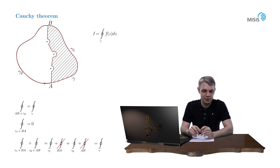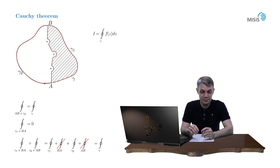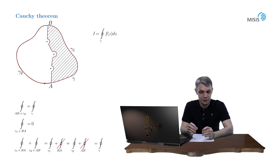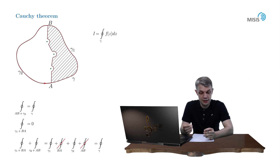One more interesting remark: the proof of the Cauchy integral theorem was based on a particular form of Green's theorem. As it happened, that particular form of Green's theorem was first addressed by Cauchy in his treatment of complex analysis, and the formal proof was given by Riemann in his dissertation on complex analysis in 1851. Isn't it interesting that this well-known fact from multivariate analysis was first addressed in the context of complex analysis?